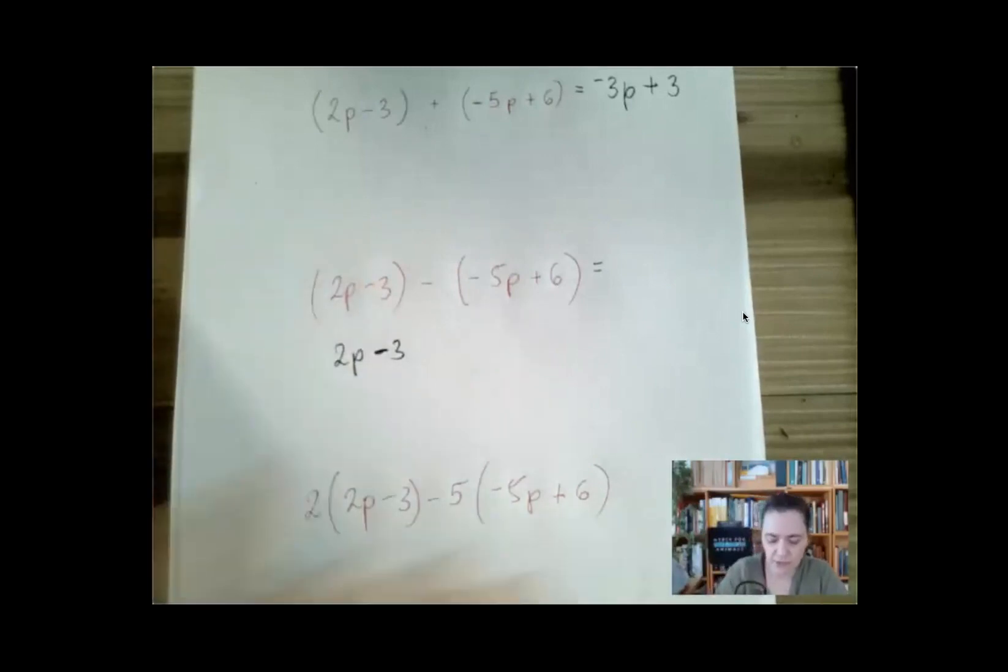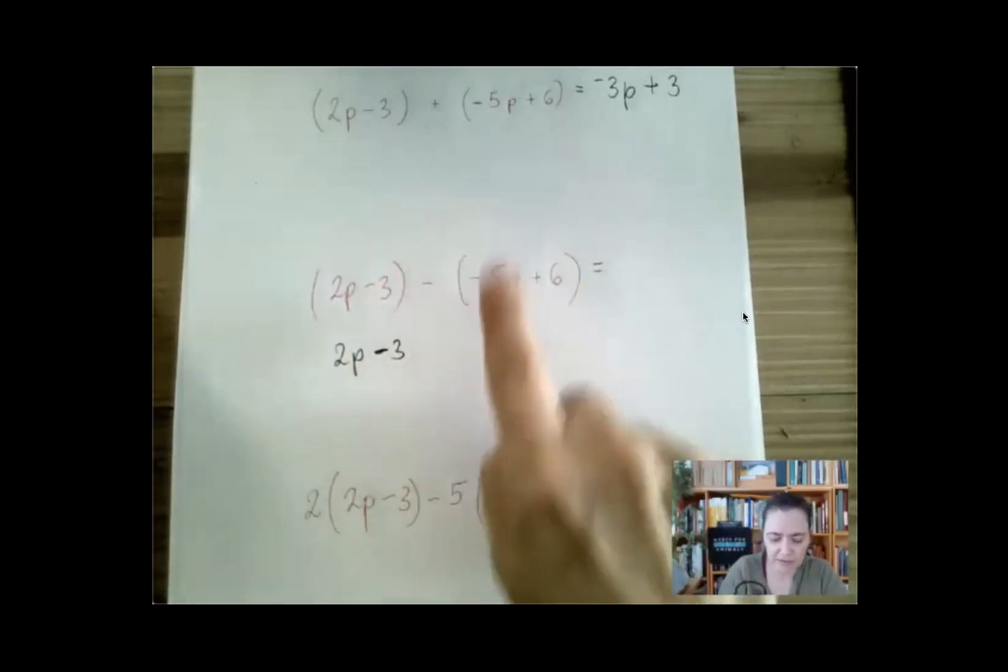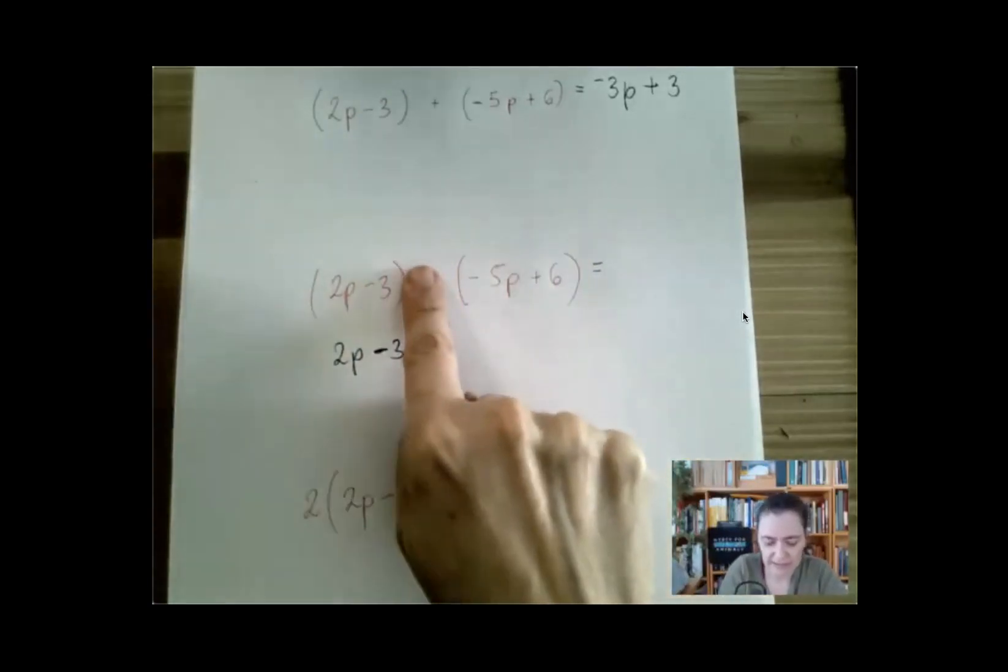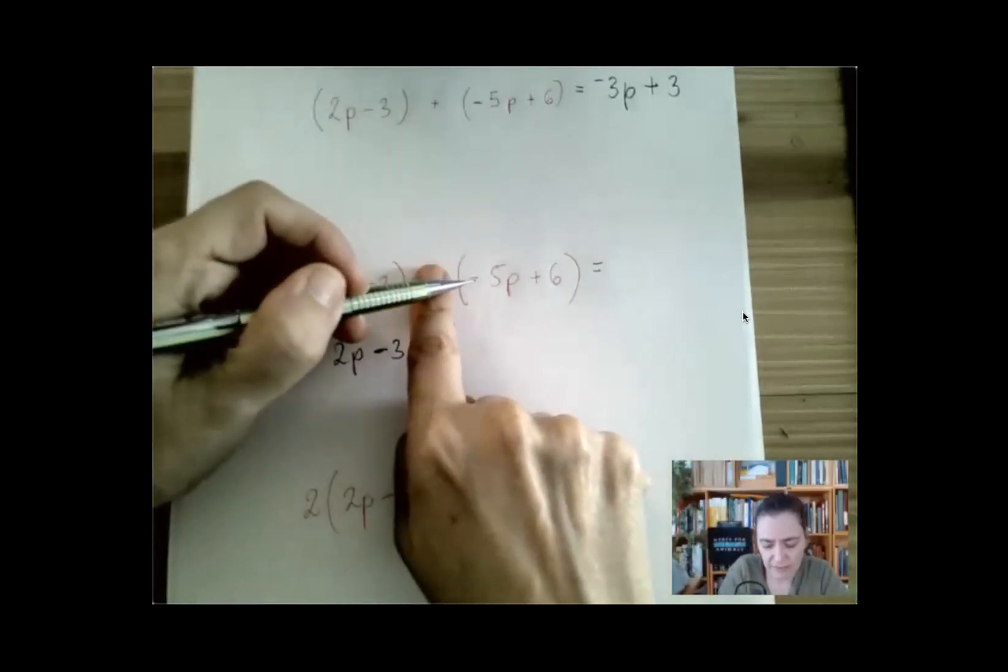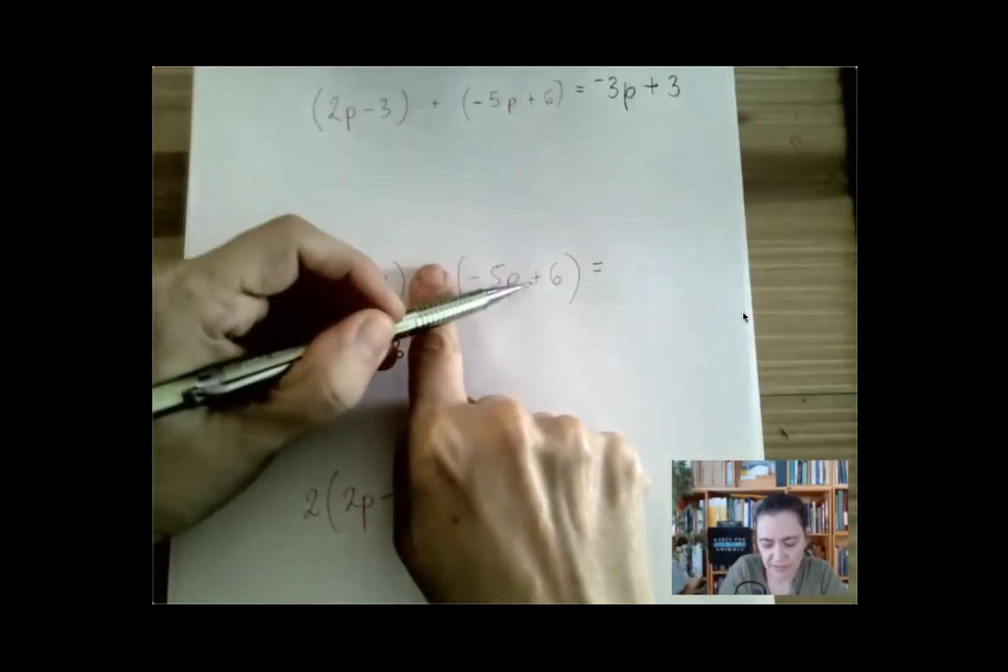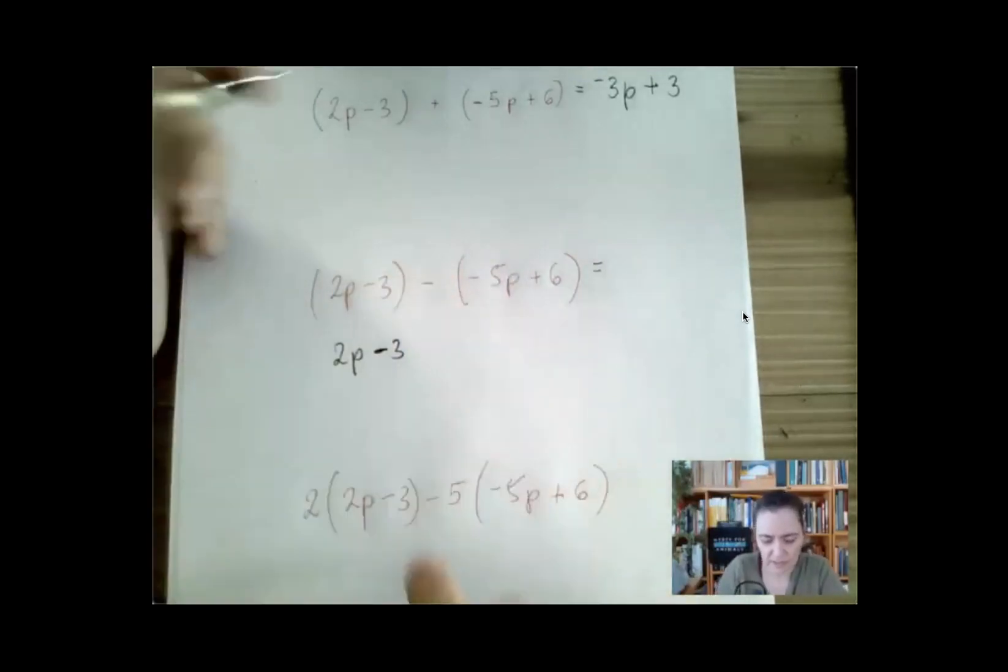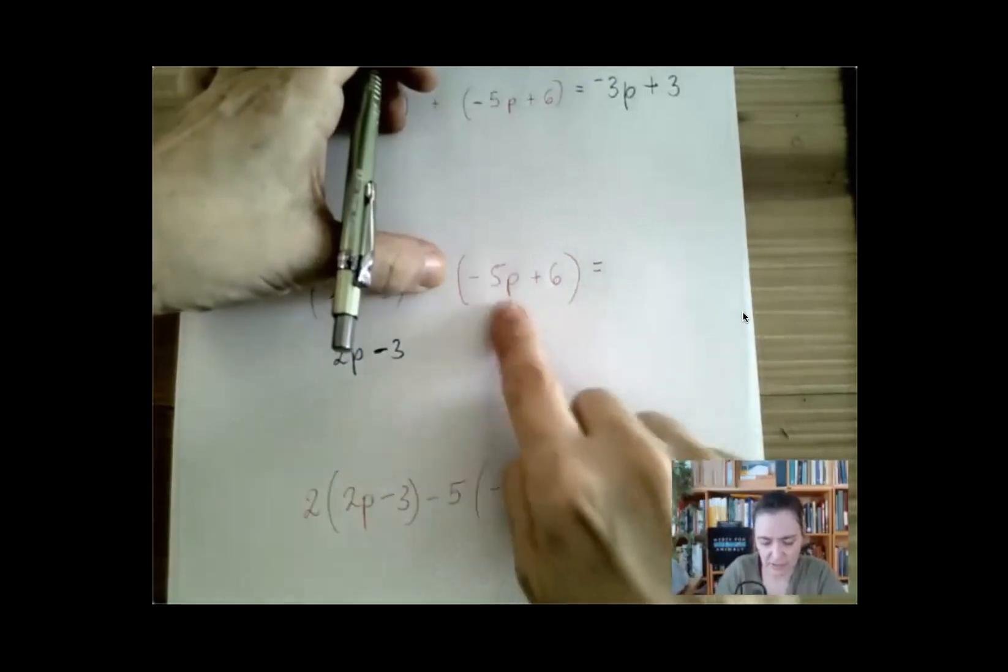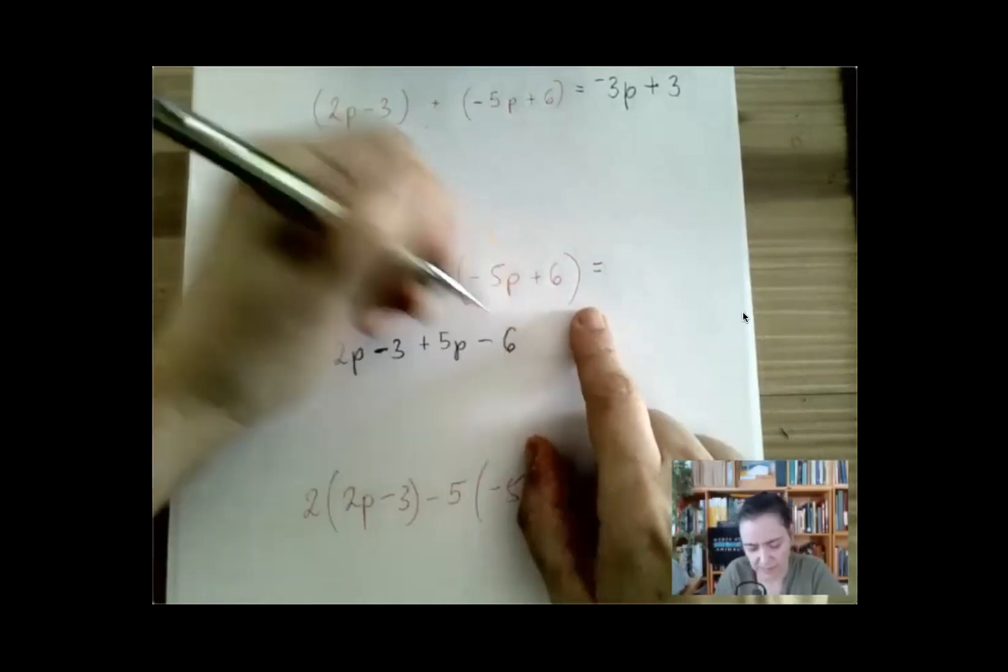So instead of subtracting negative 5p plus 6, we're going to add the opposite, which means we're going to add the thing that we get when we change all the signs. So this negative 5p is going to be a plus 5p. This plus 6 is going to turn into a negative 6. So to subtract is to add the opposite, opposite of this is plus 5p and minus 6.